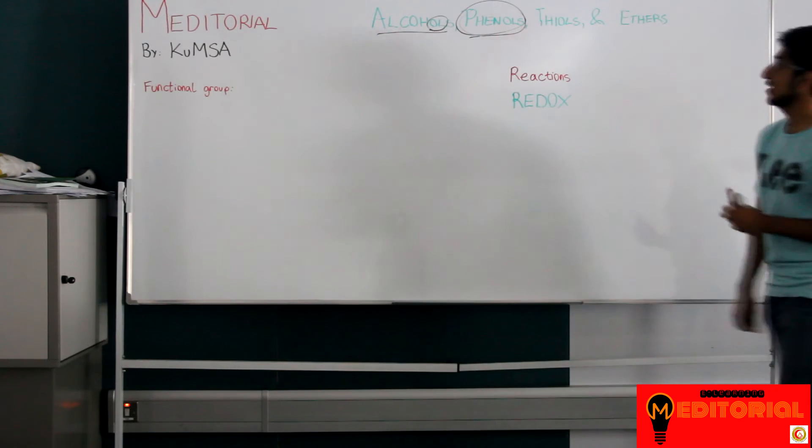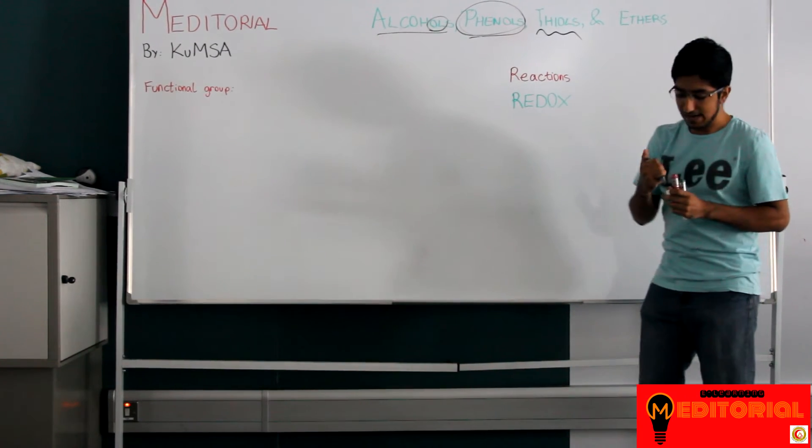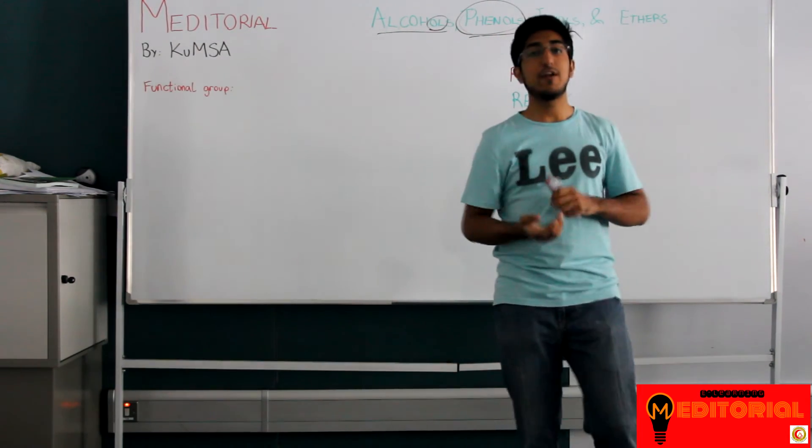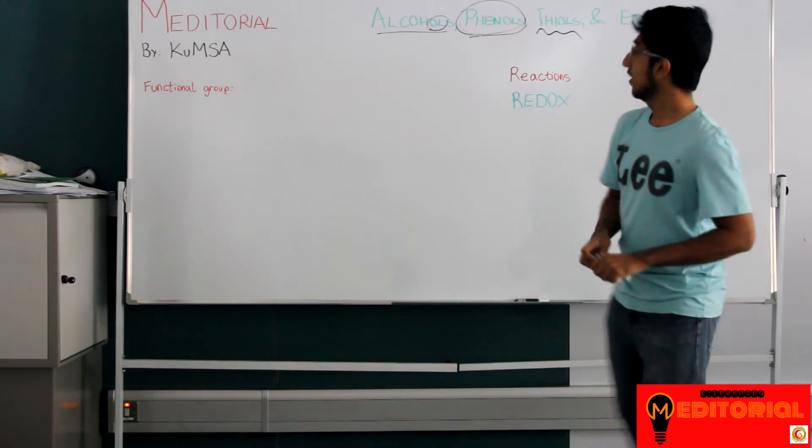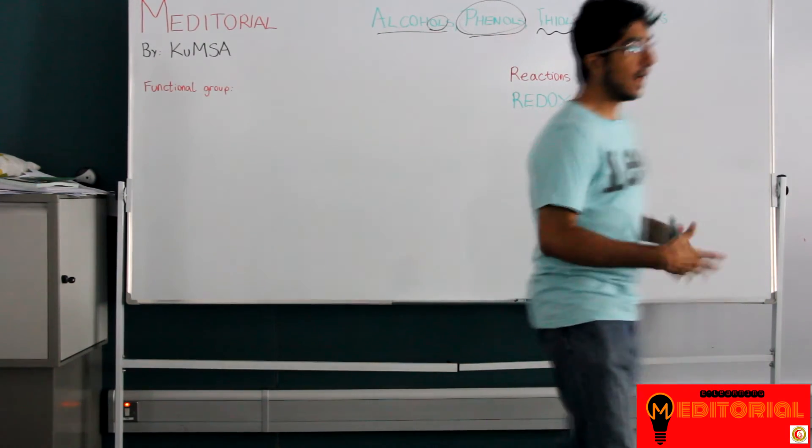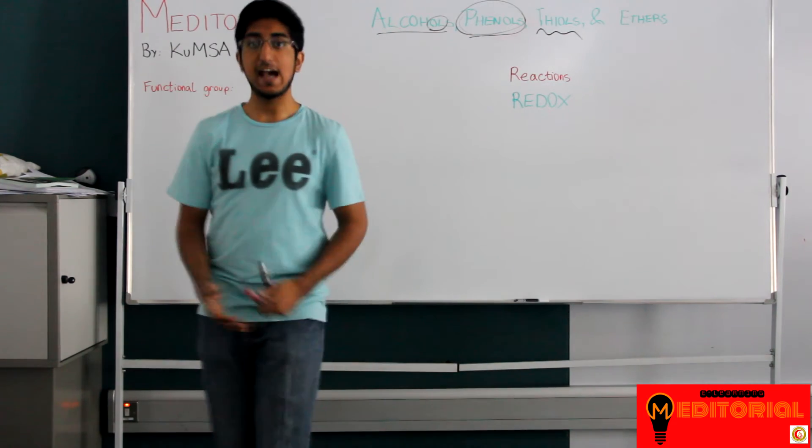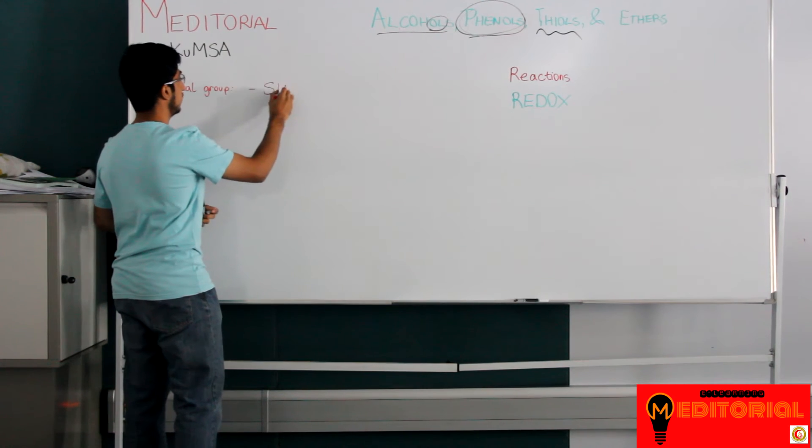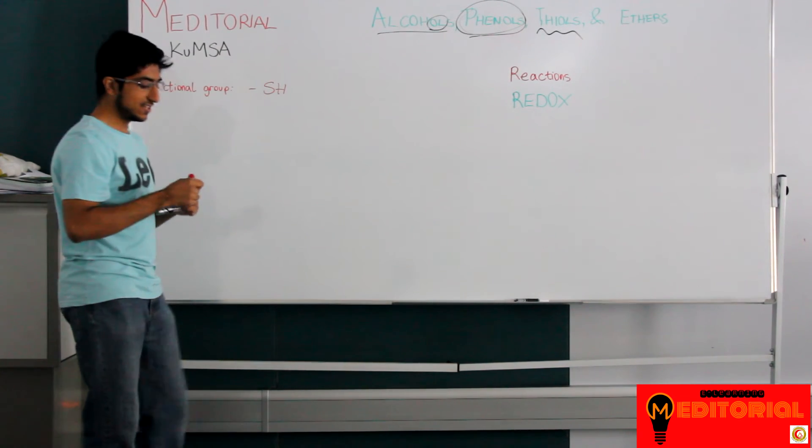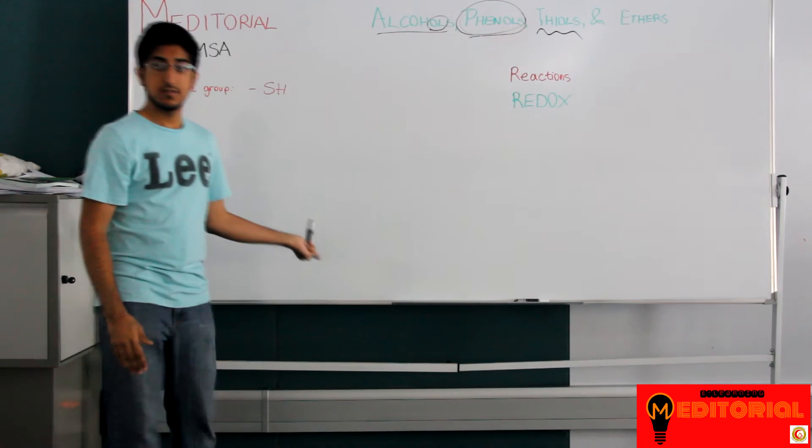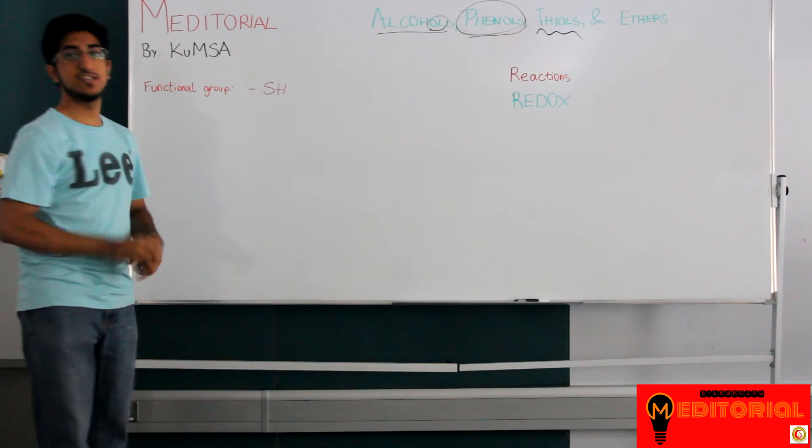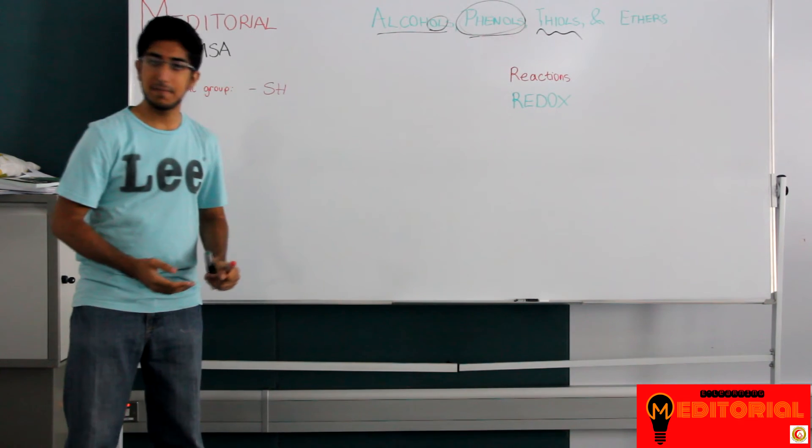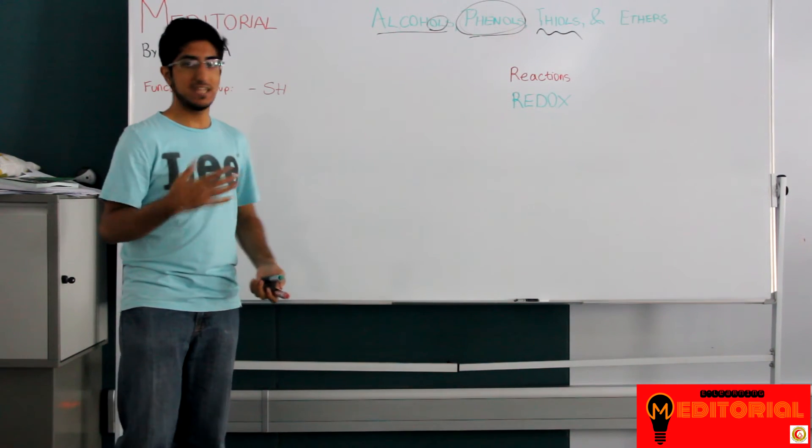Now we're going to talk about thiols. Now thiols are very interesting because they're actually quite similar to alcohols in structure, but very different in their reactions. Alcohols have an OH as their functional group. Thiols have an SH as their functional group. Sulfur is in the same periodic group as oxygen. It's in group 6, therefore it has the same number of valence electrons allowing it to have the same number of bonds and therefore roughly the same chemical properties.